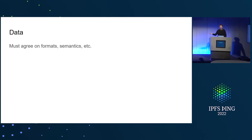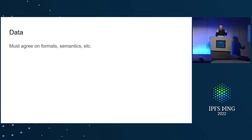To walk back a bit: right now we're very much in the world of data, where standards are built around data. We have protocols, but protocols are just data on the wire. The problem is we must agree on different formats, semantics — how do we actually send this data around, what does the data mean, when do I send a message on a protocol? This just means we have to agree on teeny tiny little details that we shouldn't have to touch.